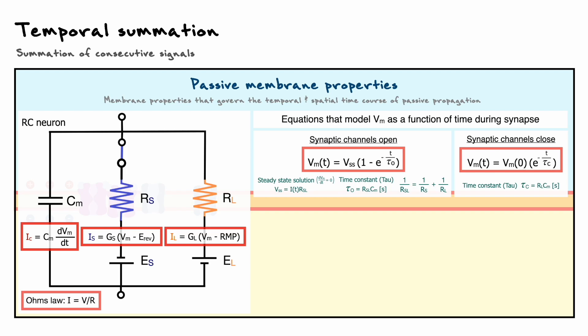First, the equation that models the membrane potential when the synaptic channels are open describes an exponential growth, whereas the equation that models the state when the synaptic channels are closed describes an exponential decay. Secondly, when the synaptic channels open, we need to take into account the resistance of the synaptic channels, and that is reflected in the value of the steady state voltage and the time constant.